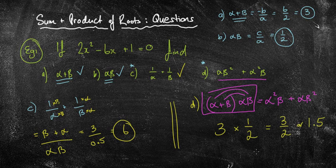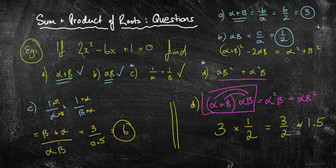Once you do a few of these questions, you start getting the hang of it. There are a couple of different types they can ask. The fraction one is pretty much always there. Another common one from last time was alpha plus beta squared minus 2 alpha beta, which gives alpha squared plus beta squared. Have a play with those and see how you go — you might need to go back and redo it.